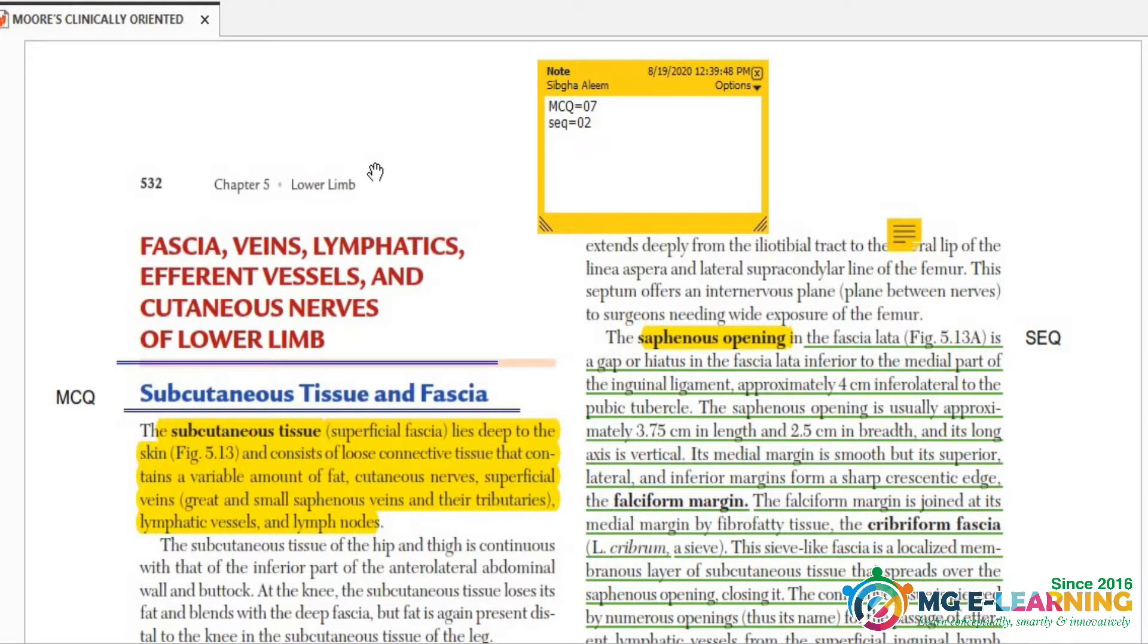Bismillahirrahmanirrahim, welcome to Medical Globe E-Learning. This is Muzda Alim from Shahid-e-Islam Medical College. Today's topic is fascia, veins, lymphatics, efferent vessels, and sectors of lower limb. Now first of all, see there are seven MCQ and two SQ from lower limb.